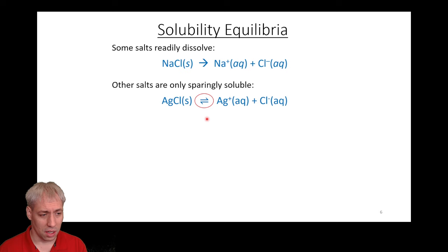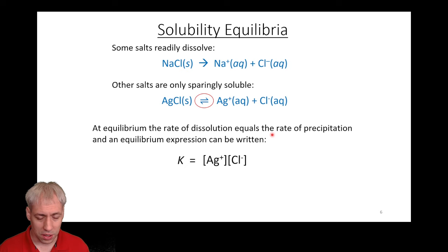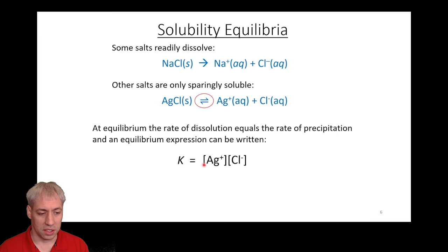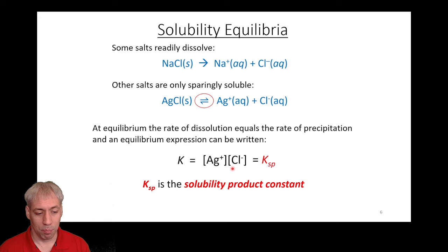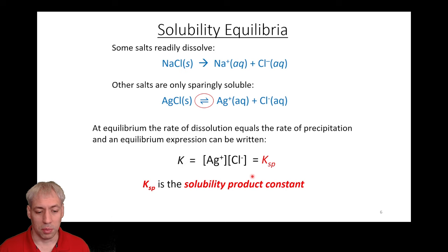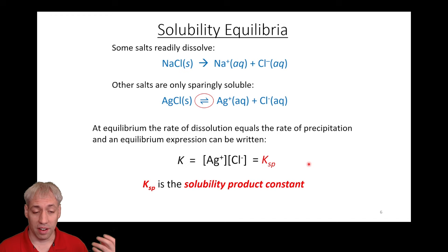We're going to apply equilibrium equations to solubility, following the rules from chapter 13. Capital K equals products to stoichiometry over reactants to stoichiometry. In this case, the products are aqueous ions and the reactant is a solid species. Solid species don't show up in the equation, so we have products to stoichiometry equal to K. Because this is a fairly common equilibrium, we add the subscript 'sp' — the solubility product constant. Everything from chapter 13 still applies: large K favors products, small K favors reactants, all rules of Le Chatelier.